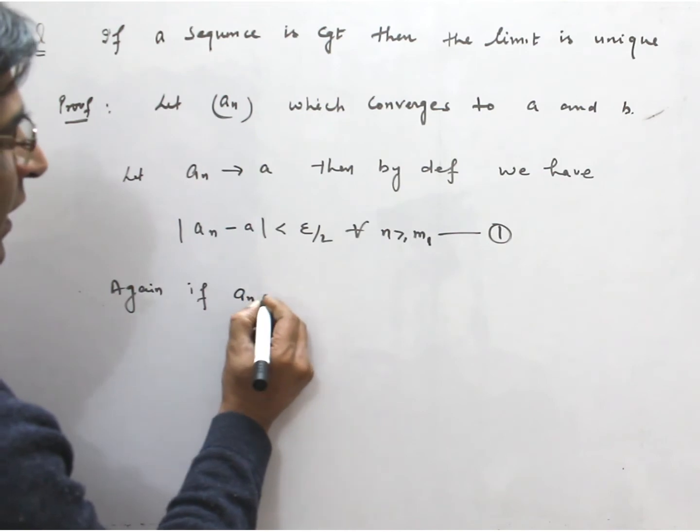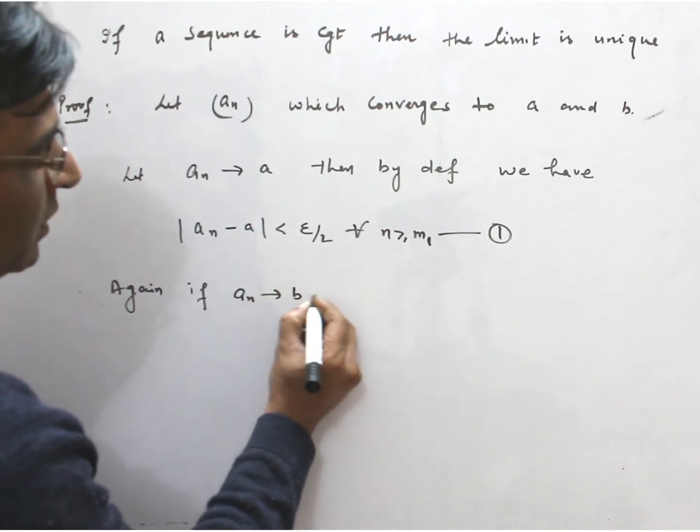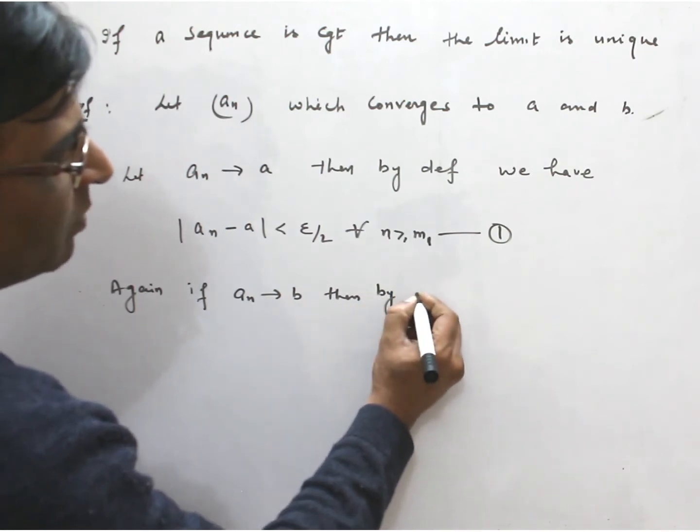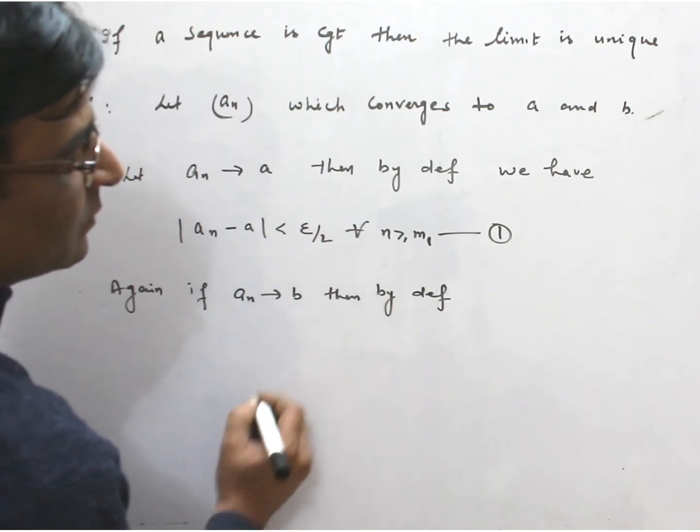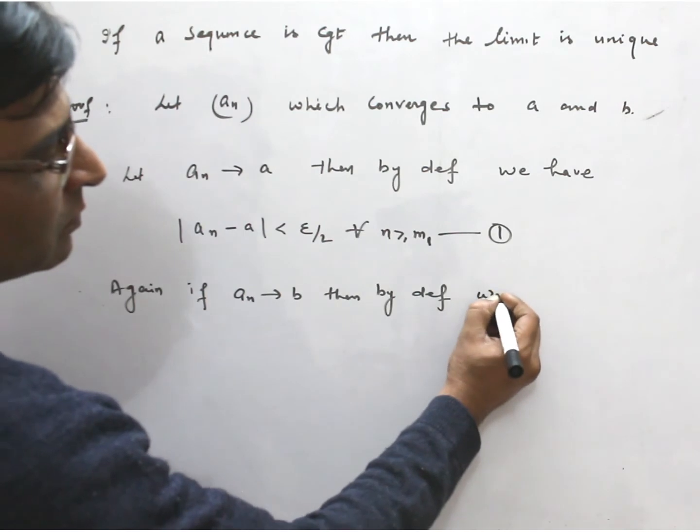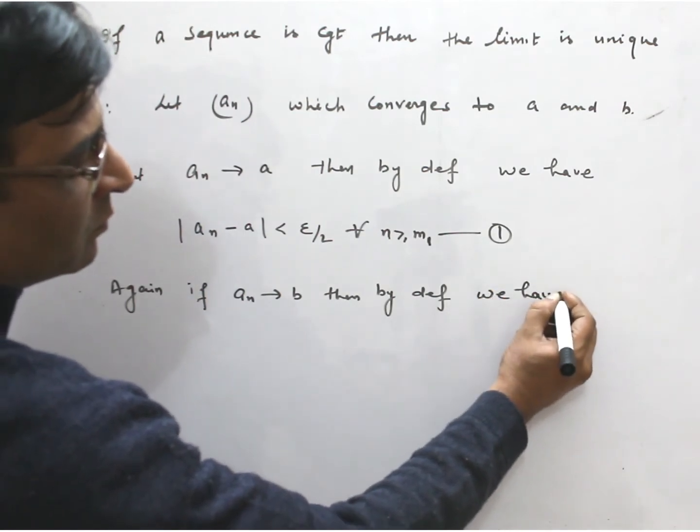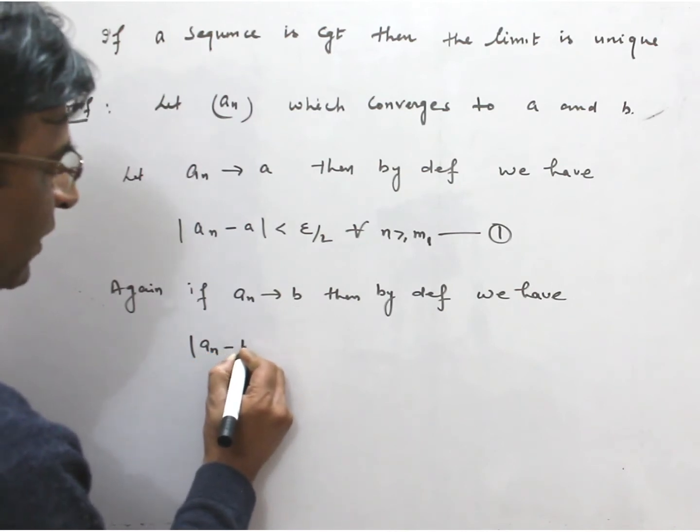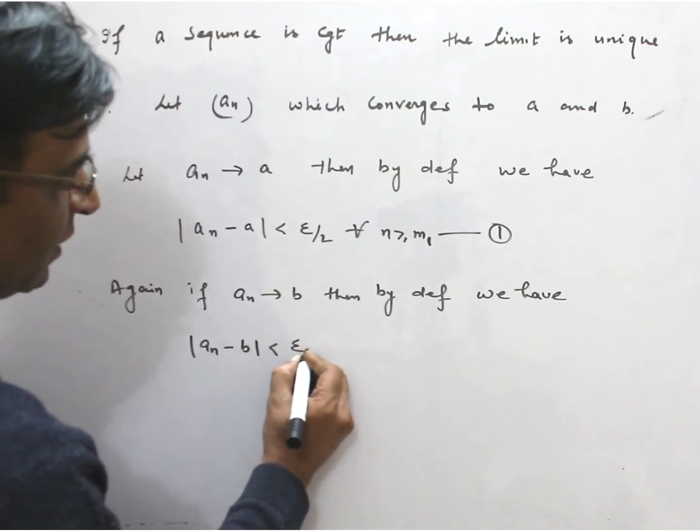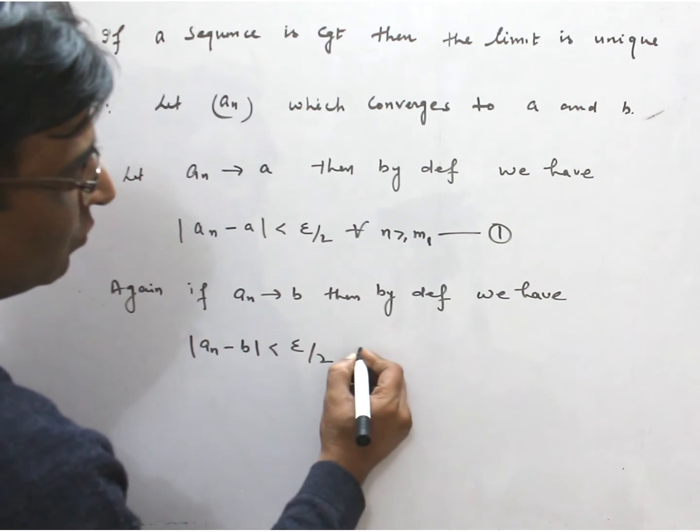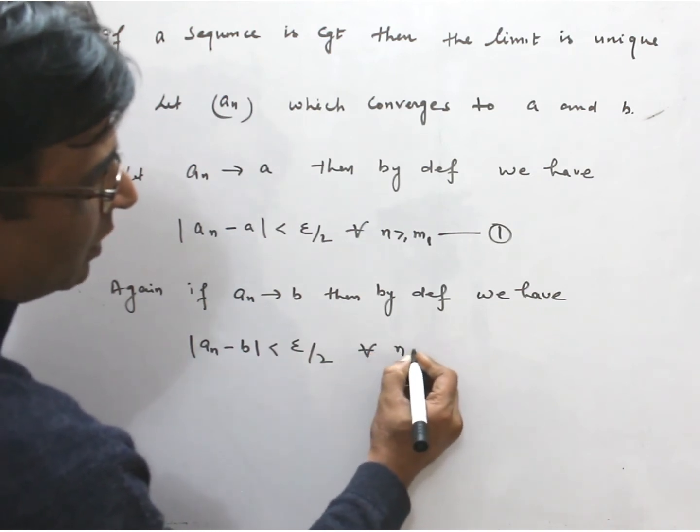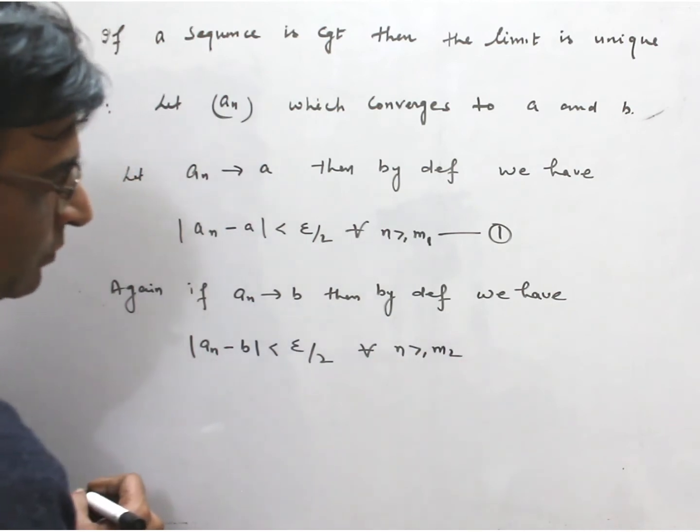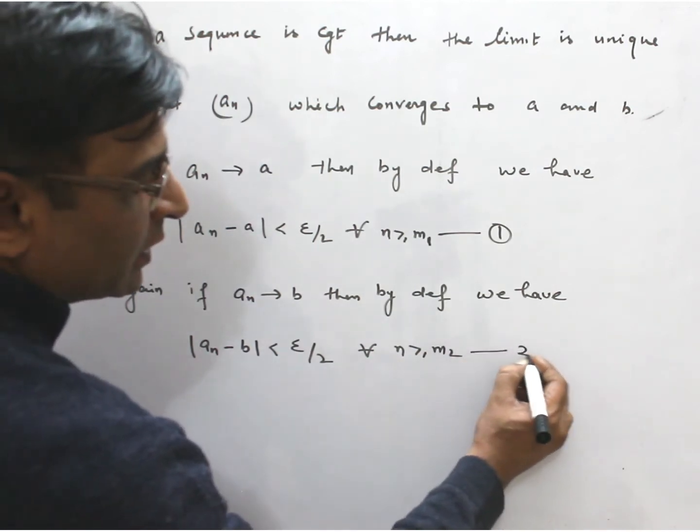Again, if aₙ converges to b, then also by definition we have |aₙ - b| < ε/2 for all n greater than m₂. This is equation number 2.